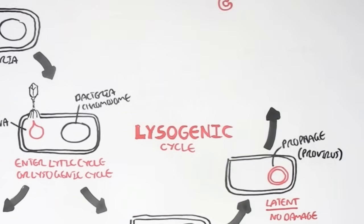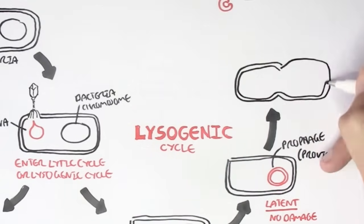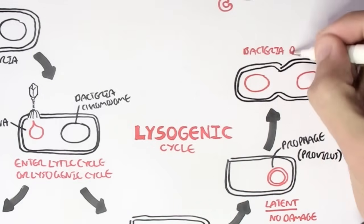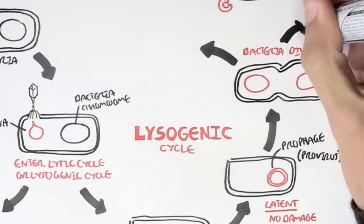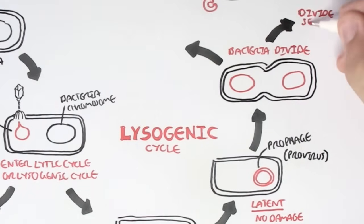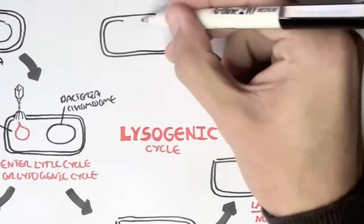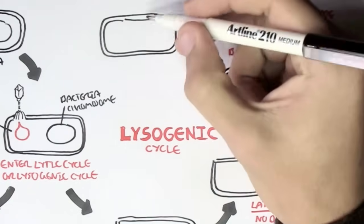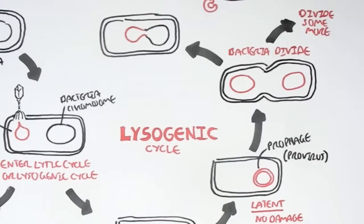However, when the bacteria itself divides, because that's what bacteria do, they divide, the phage DNA is also copied, and this can keep occurring. So again, each time the bacteria divides, the phage DNA will also be copied, and so we would have more phage DNA. This can keep occurring, the bacteria can keep dividing, and the phage DNA can keep being copied, until one day the phage DNA decides to move out of the bacterial chromosome.